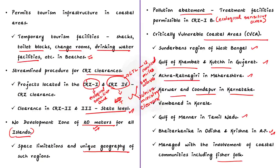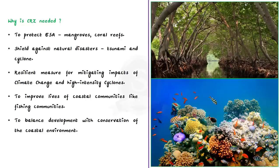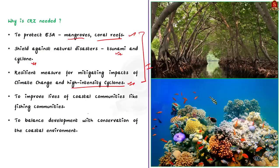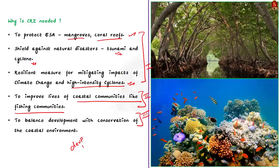Critically Vulnerable Coastal Areas will be managed with the involvement of coastal communities including fishing communities. These are the important features of the CRZ Notification 2019. Now, why is coastal regulation zoning needed? First, it is required to protect ecologically sensitive areas like mangroves and coral reefs, which act as shields against natural disasters like tsunami and cyclone. CRZ is also a resilient measure for mitigating climate change impacts. Second, it improves the lives of coastal communities like the fishing community. Third, it balances development with conservation of the coastal ecosystem.